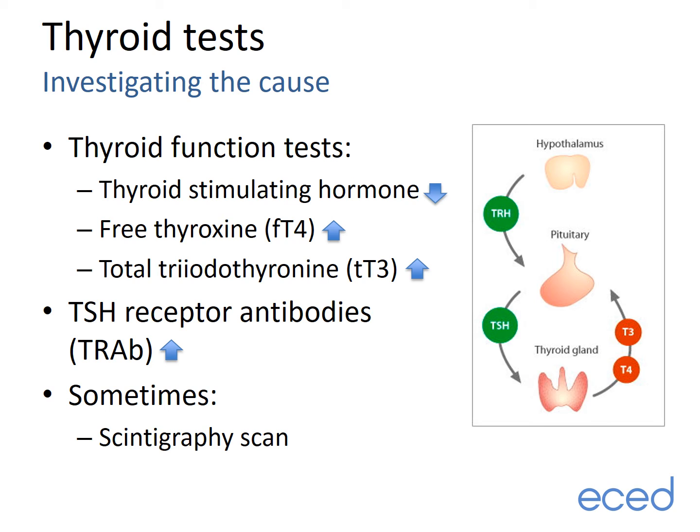The opposite is also true: if thyroid hormone levels fall, the pituitary senses this and makes more stimulating hormone, pushing thyroid hormone levels back up to normal. This loop normally works perfectly to keep levels steady. In Graves disease, the thyroid is no longer under control and very high thyroid hormone levels mean TSH is shut down — levels are undetectably low in the bloodstream. The pattern of high thyroid levels and undetectable TSH confirms the diagnosis of an overactive thyroid.